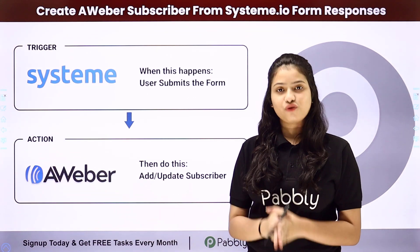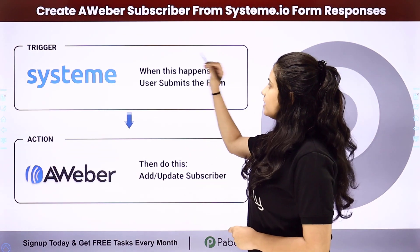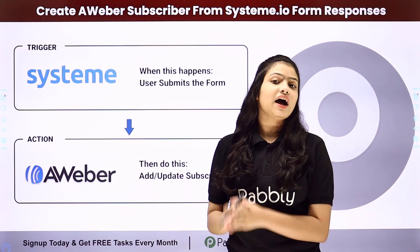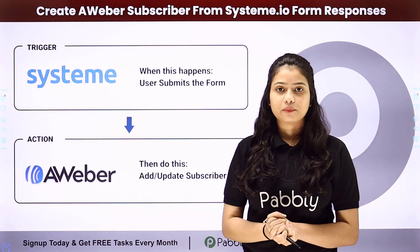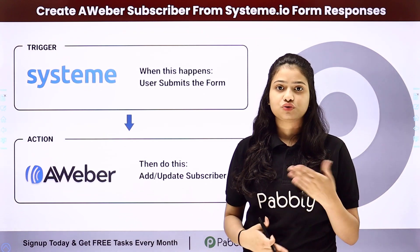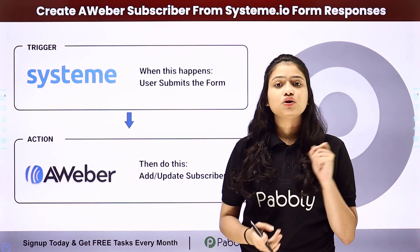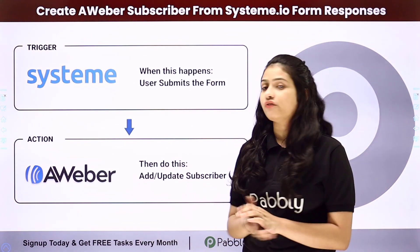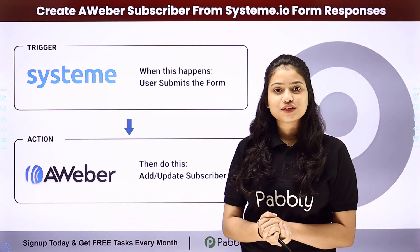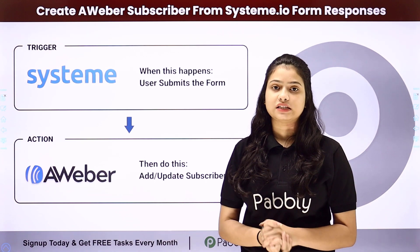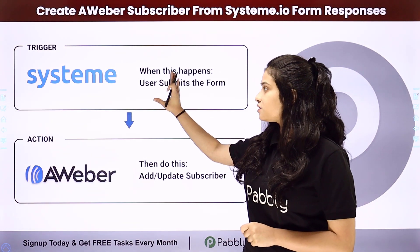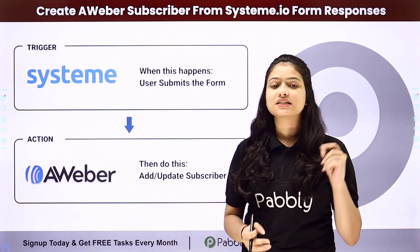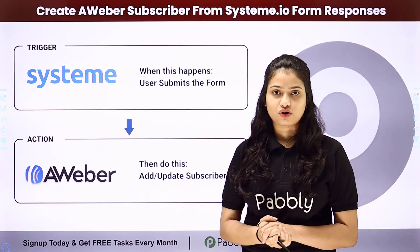Hello everyone. In this video we are going to learn how to create an Aweber subscriber from a Systeme.io form submission. We want that as soon as a new form is submitted in Systeme.io through a contact or a new lead, automatically by using that same response, a new subscriber should be added in our Aweber account. For that we are going to use Pabbly Connect, which is an amazing automation and integration software.